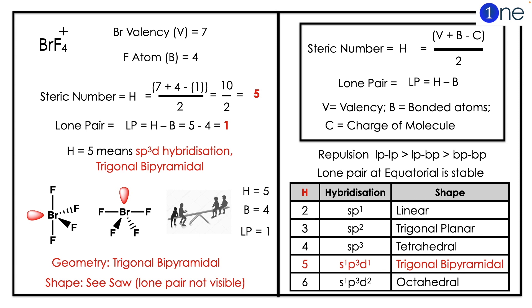Here you have to find the hybridization to find the shape. So H equals V plus B minus C, whole divided by two. Here V stands for valency. Bromine valency is seven and bonded atom fluorine is four.